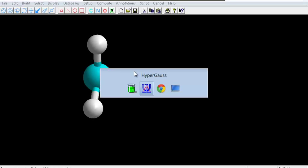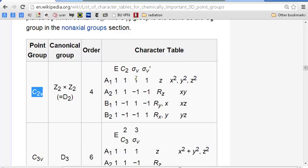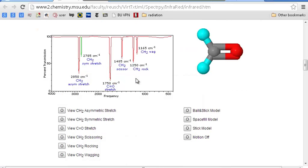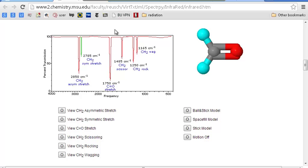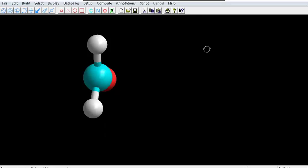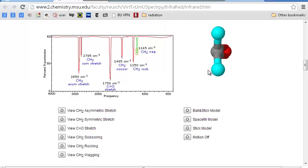If we go to a website which purports to identify things like that, here we have this is called a CH2 wag. Let's see, that's identified as a CH2 wag. So these atoms, as we saw in HyperChem, yes, that was wagging there. So yeah, that's right. But really, it's not just the CH2 that's moving.